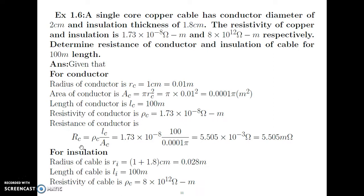Resistance of conductor RC = ρC × LC / AC. Substituting the values of ρC, LC, and AC, we get the resistance as 5.505 into 10 raised to minus 3 ohm, that is 5.505 milli ohm.